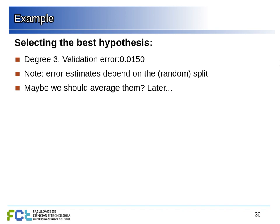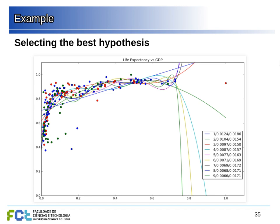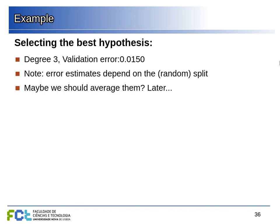One thing to note is that the actual values depend on which points ended up in the training, validation, and test sets. Since the split is random, running everything again might give a different best model and a different hypothesis. This suggests that using only one random sample may not be the best approach, and we'll see later how to average over multiple samples.